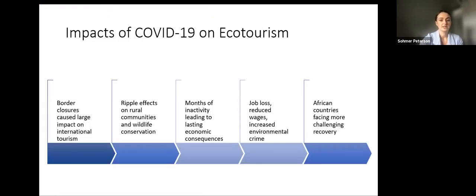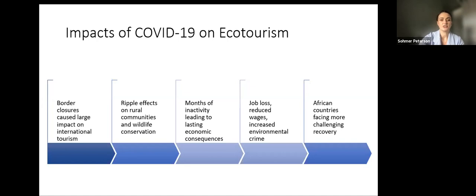Before getting started we first looked at the effects created by the pandemic and how they were specifically impacting the ecotourism sector. What was seen across the board in countries around the world was a ripple effect on rural communities and wildlife conservation. In April 2020, with the sudden international border closures and social safety measures, many low-income communities dependent on ecotourism faced months of inactivity, leading to high levels of job loss, reduced wages, increased environmental crime, and severe economic consequences that are still felt today.